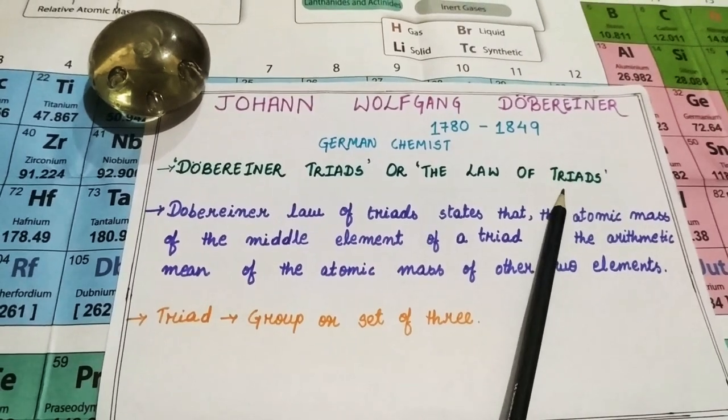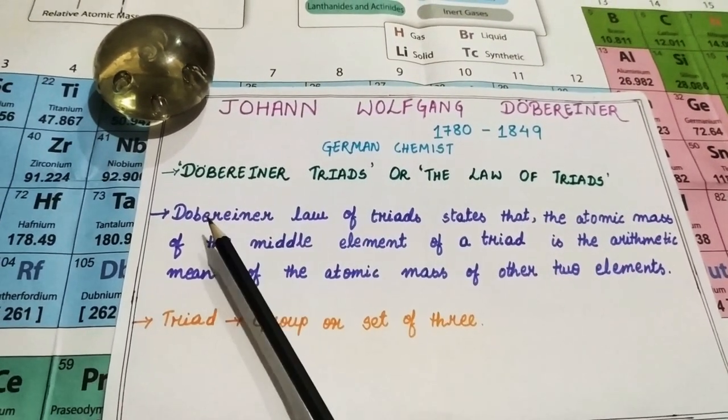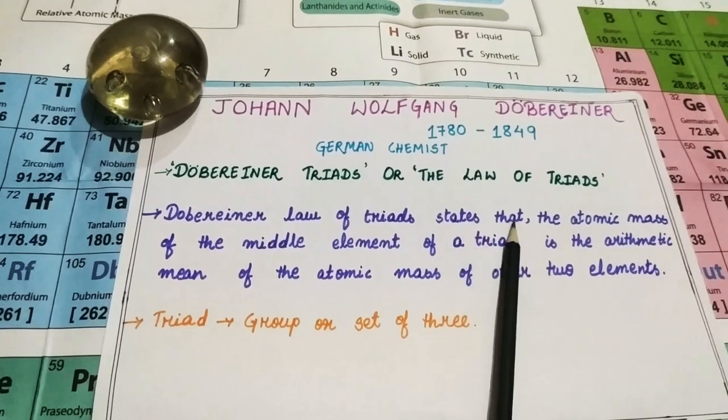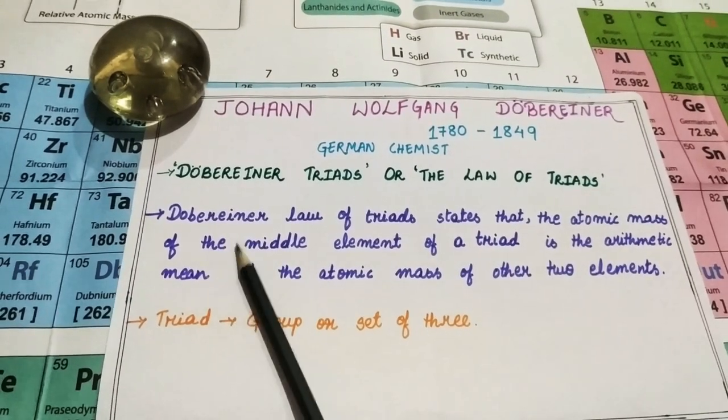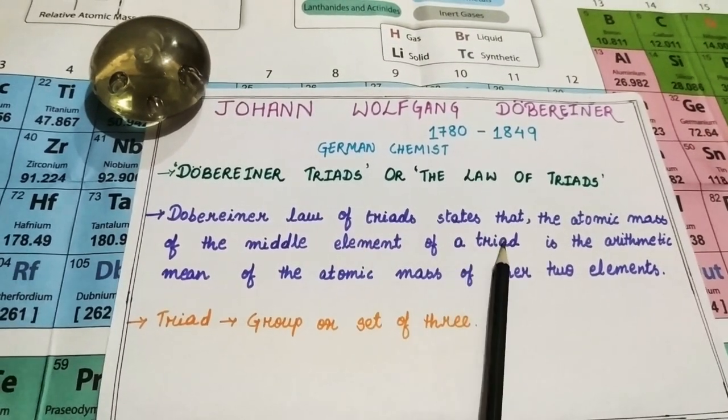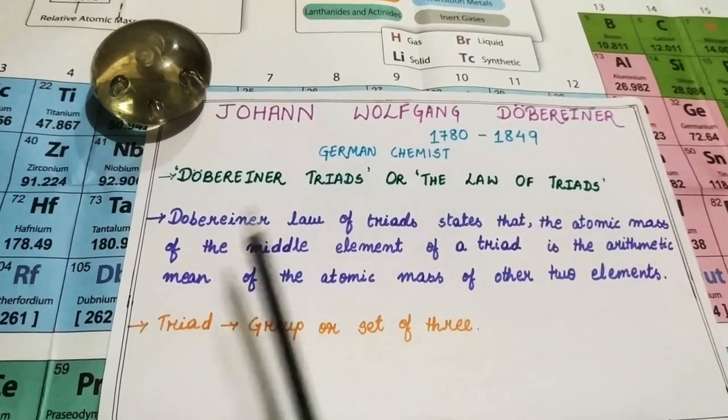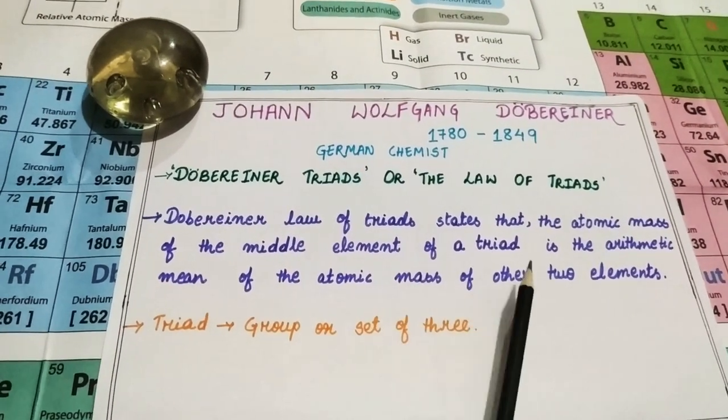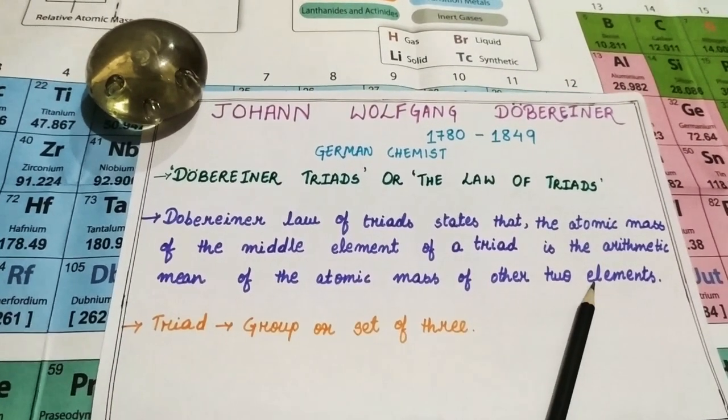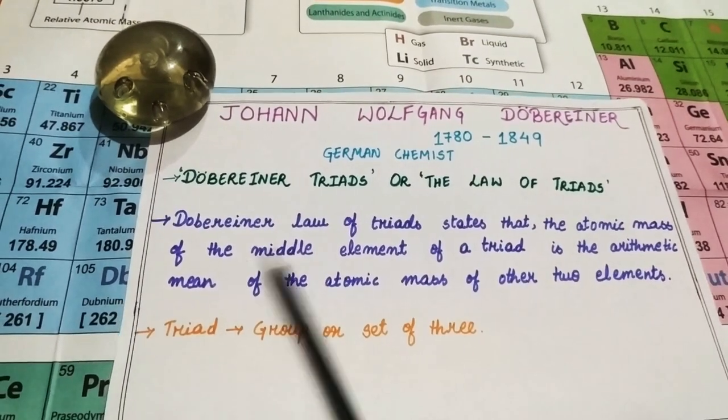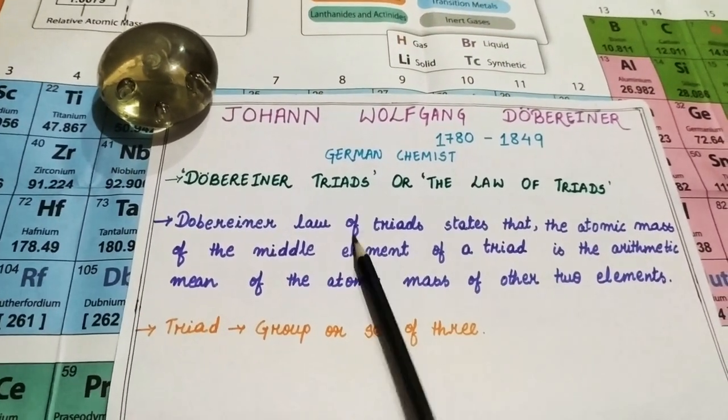Here we have Dobereiner triads or the law of triad. Let us see what his statement states. Dobereiner's law of triad states that the atomic mass of the middle element of a triad is the arithmetic mean of the atomic mass of the other two elements.